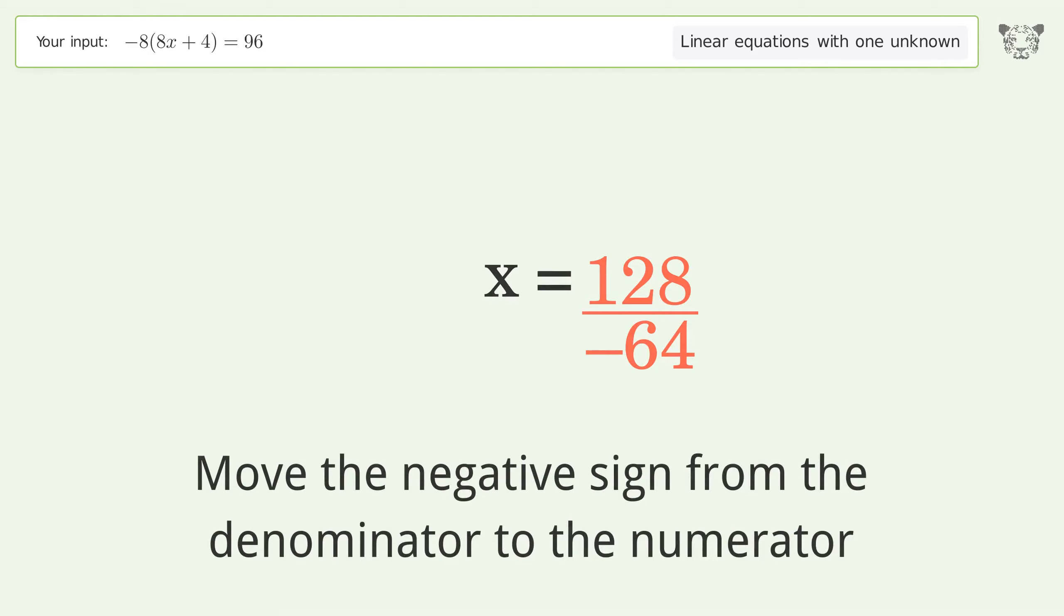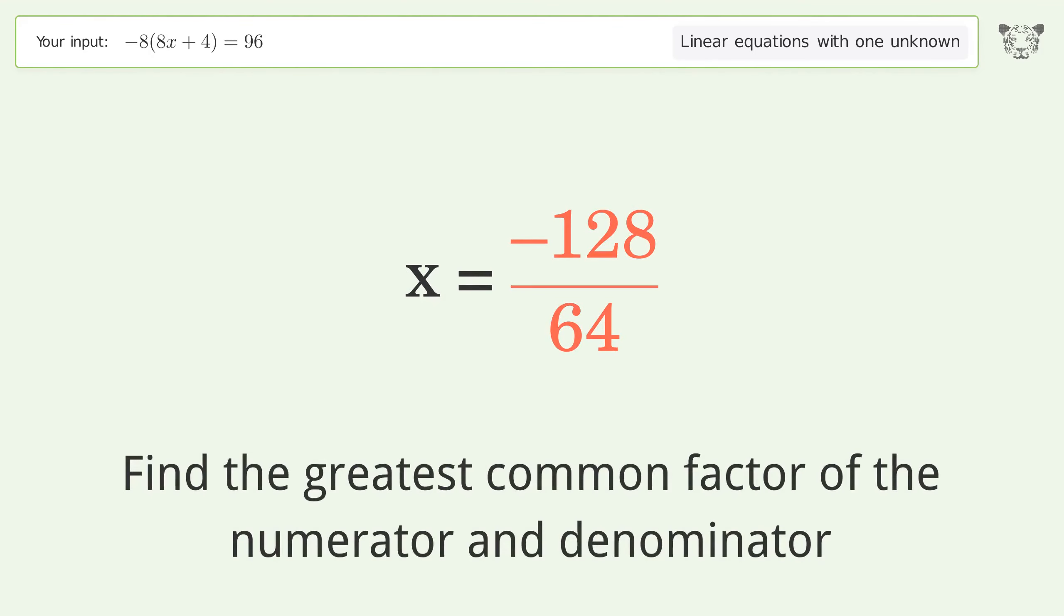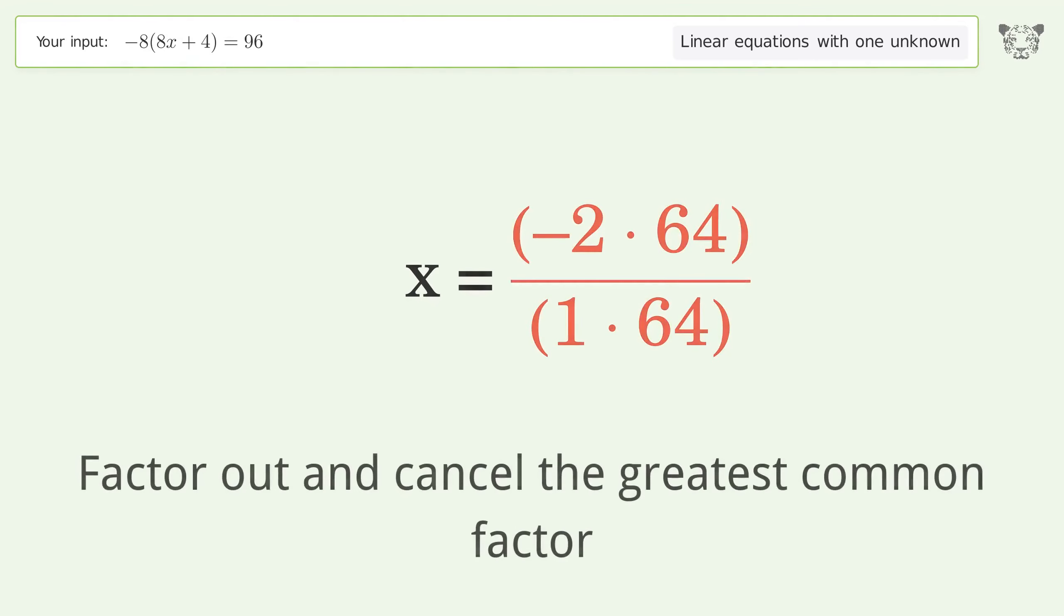Move the negative sign from the denominator to the numerator. Find the greatest common factor of the numerator and denominator, then factor out and cancel the greatest common factor.